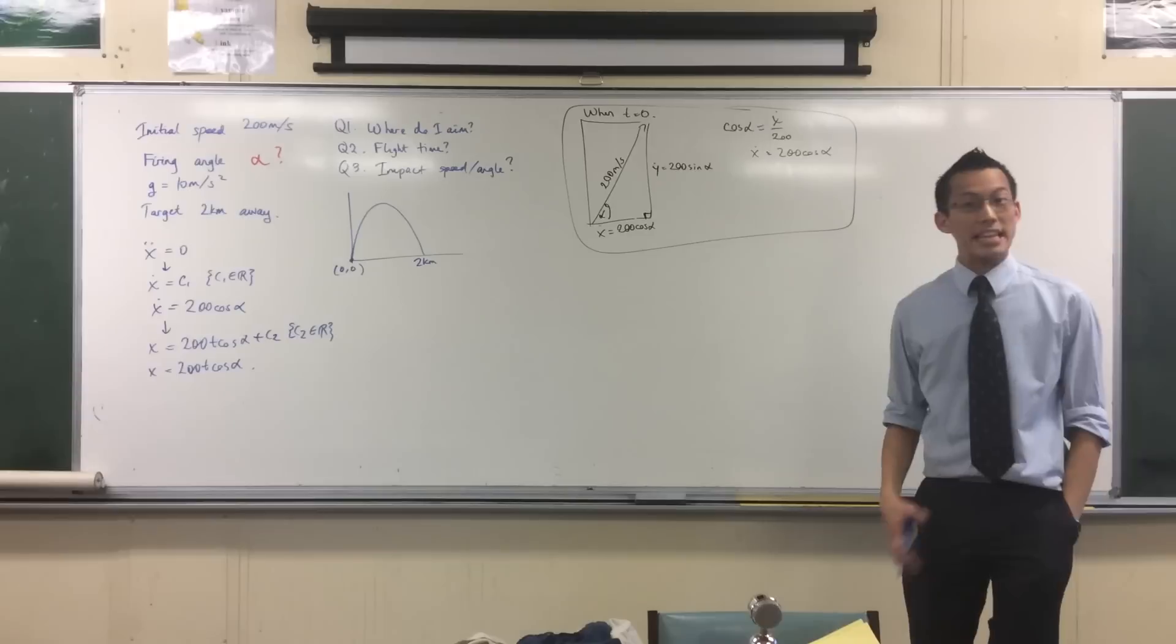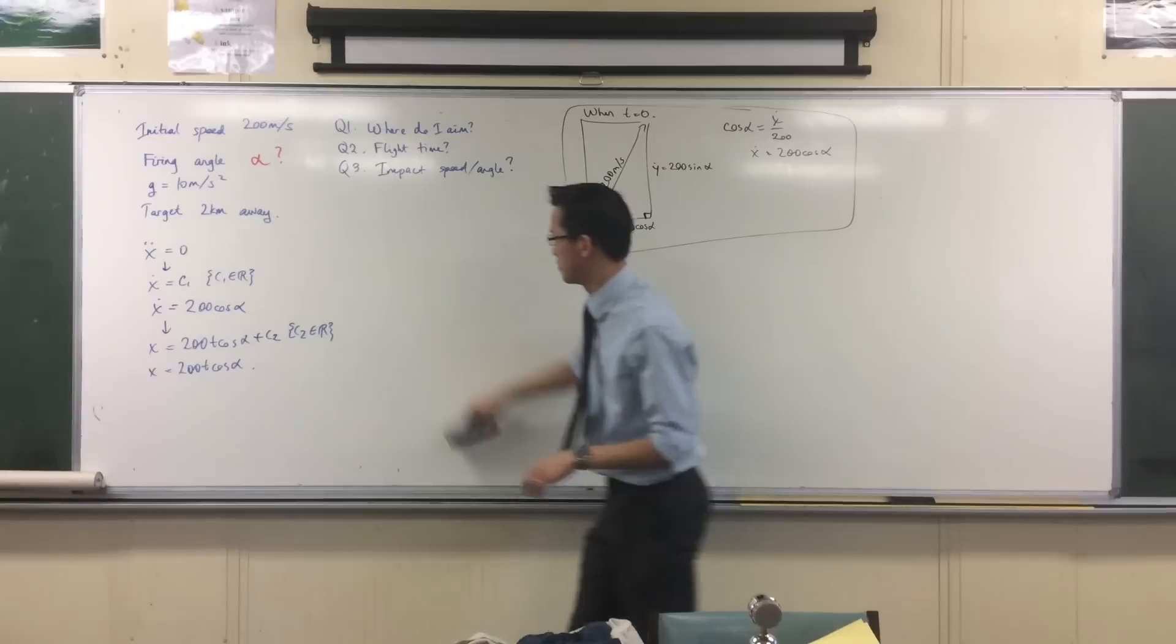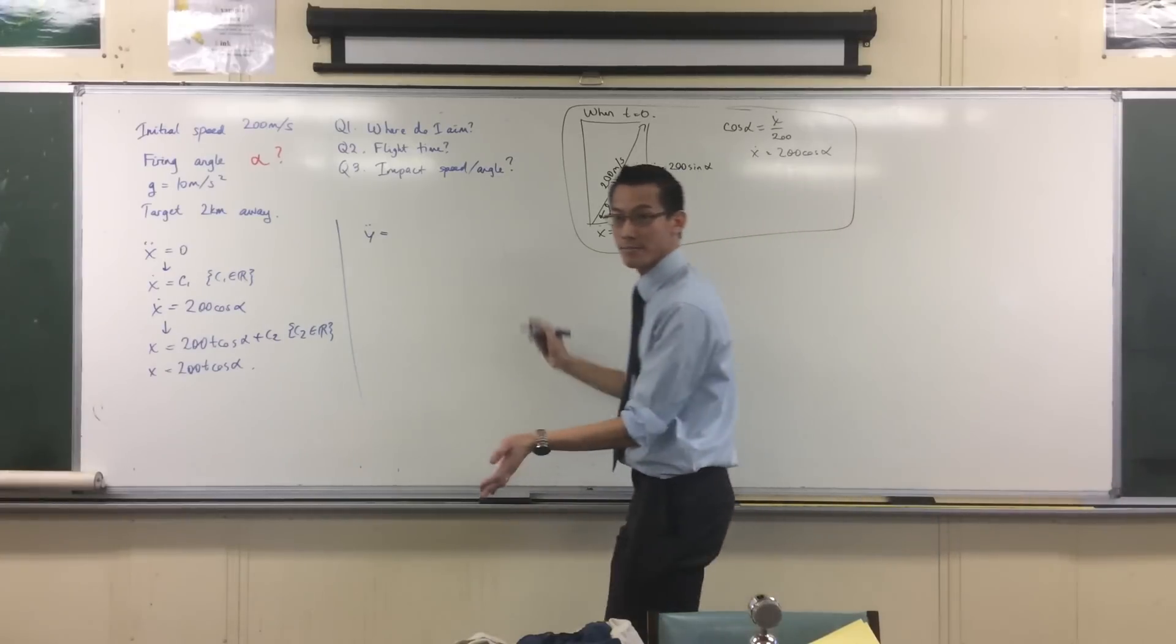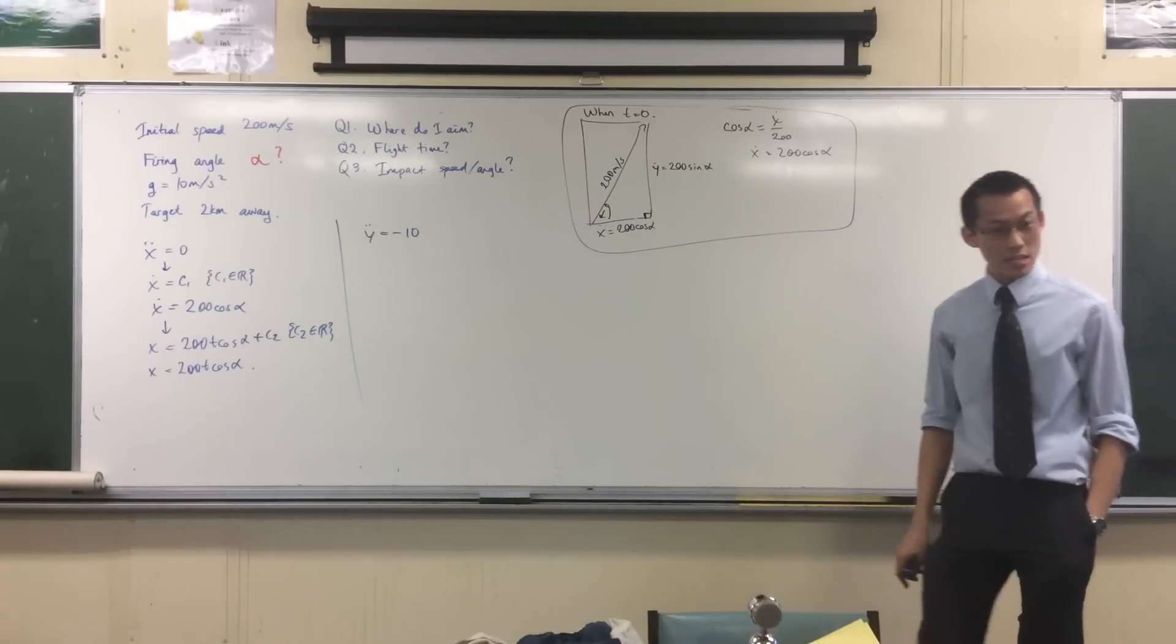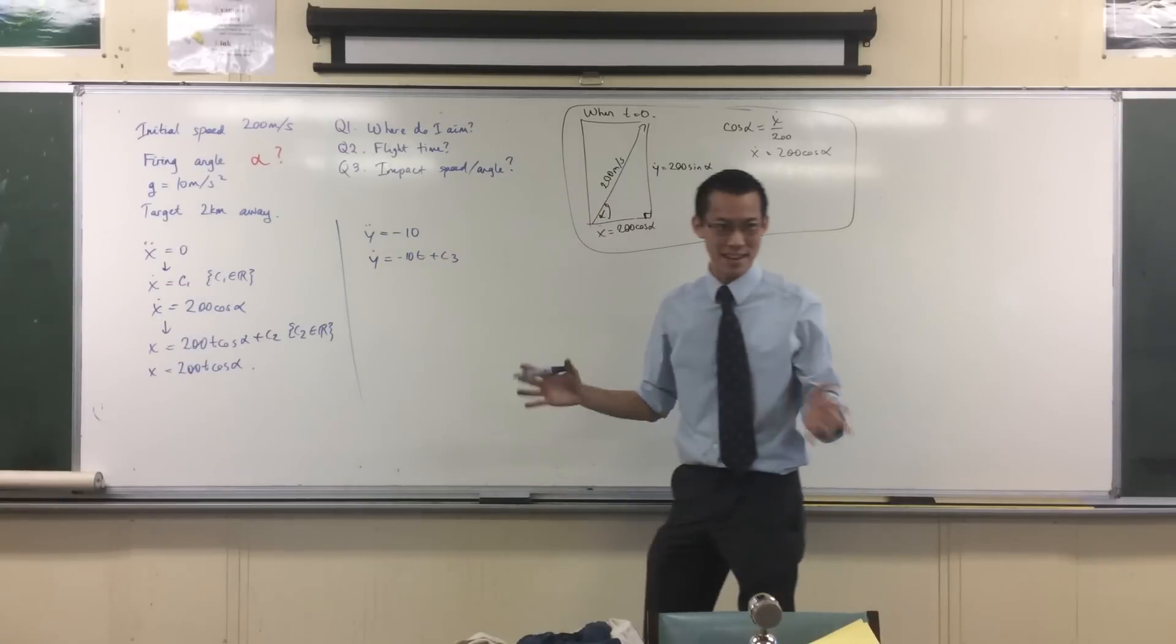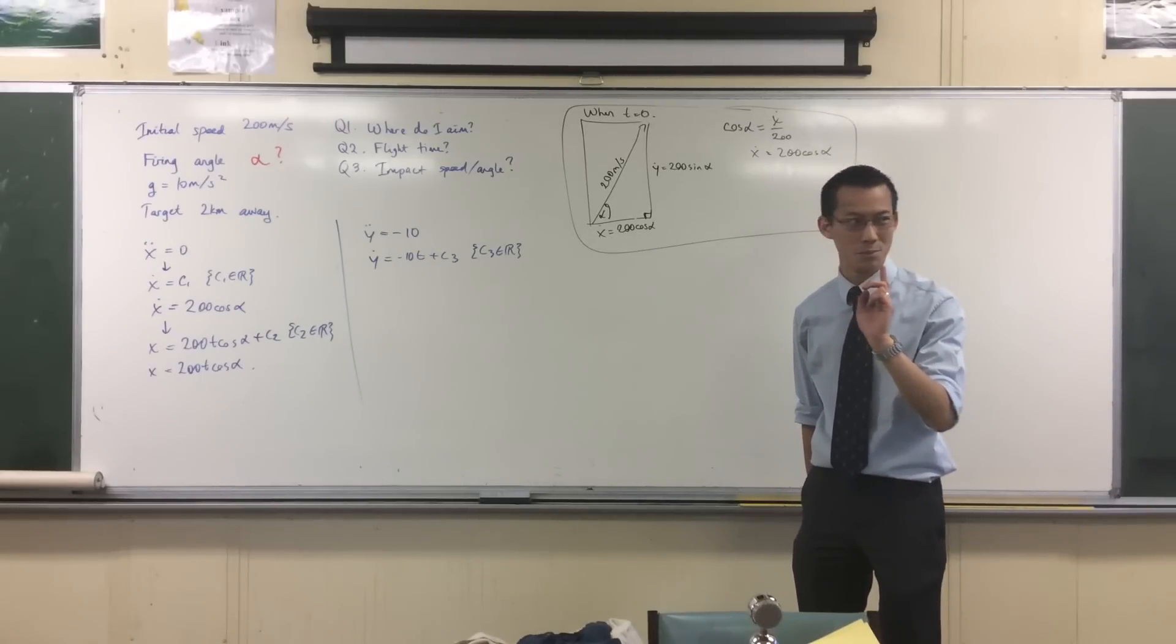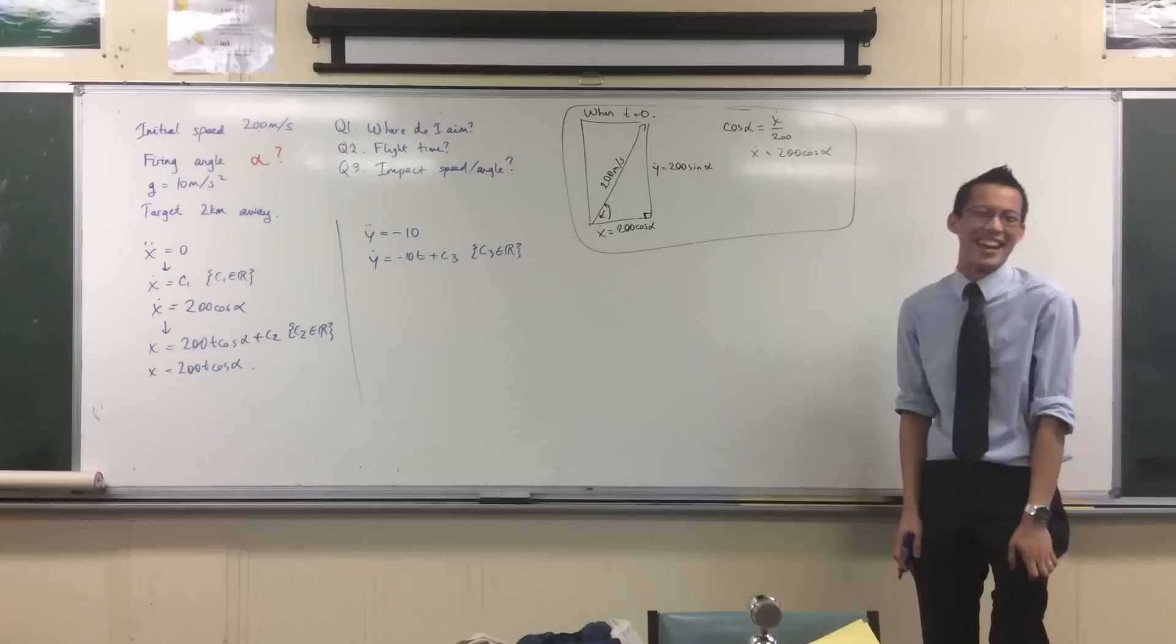So x is going to be equal to just this. Done. So far so good. Let's do all of the vertical stuff which is far more interesting. Acceleration - you got gravity and that's it. So what's my acceleration equation for y? Negative 10 because it's going that way. So you integrate once and you get the third constant. How do I get rid of this constant again? Initial vertical condition.